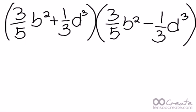Let's start off with this problem: 3 fifths b squared plus 1 third d cubed quantity 3 fifths b squared minus 1 third d cubed.